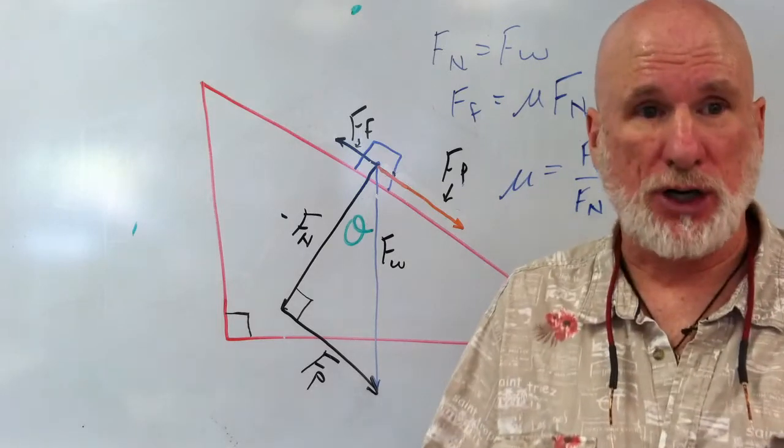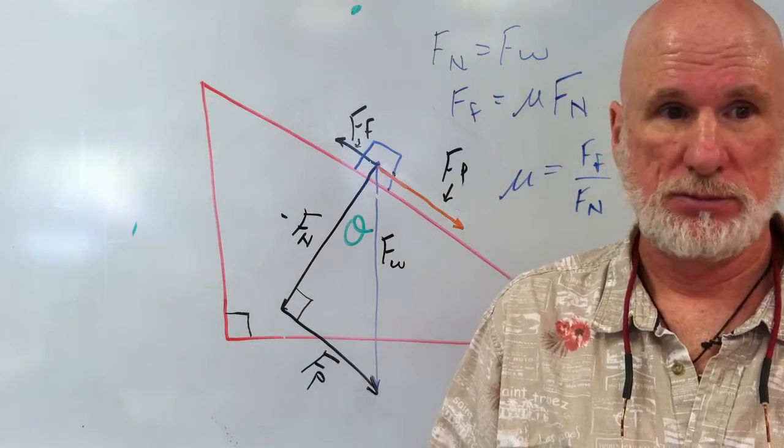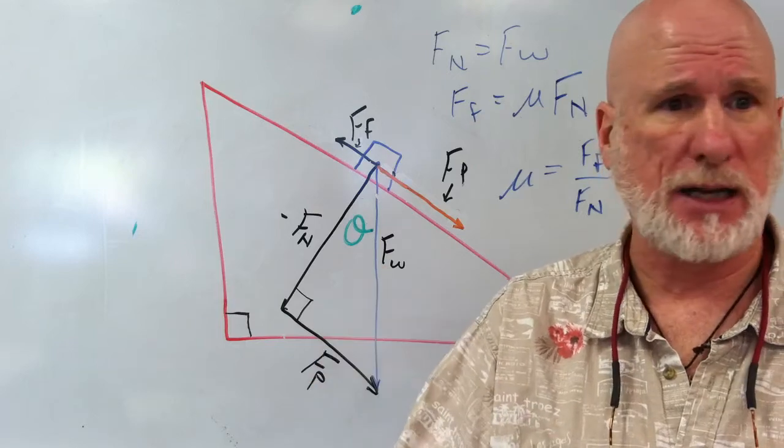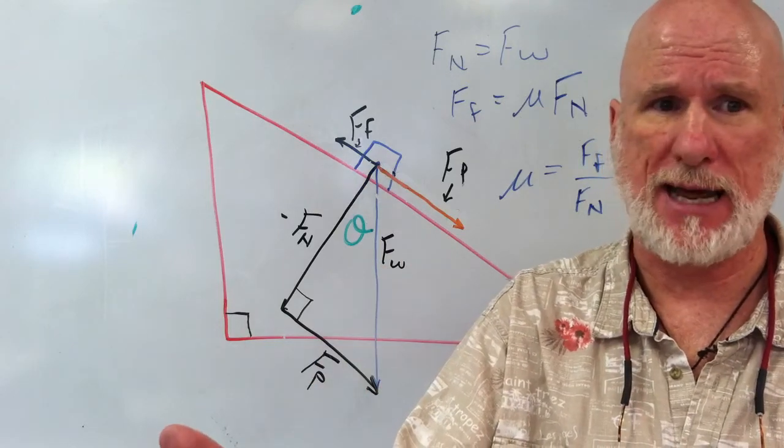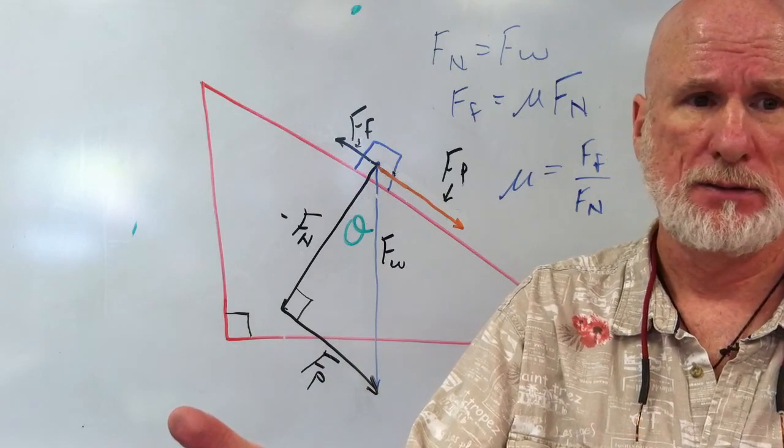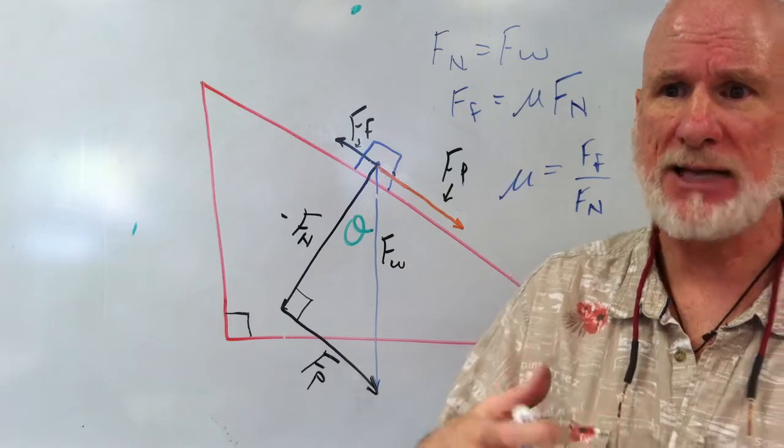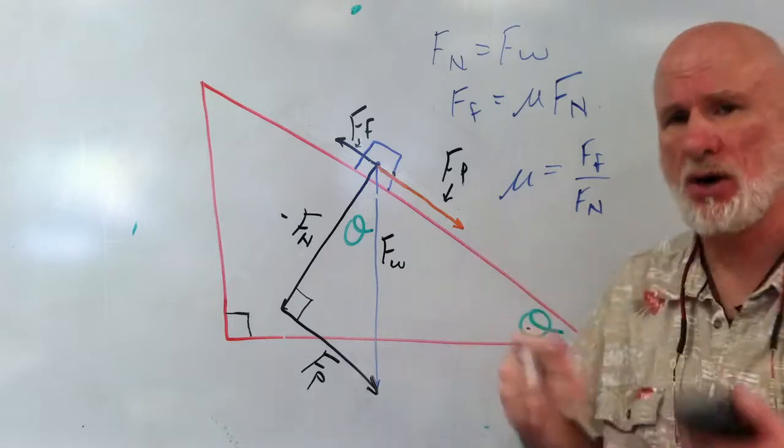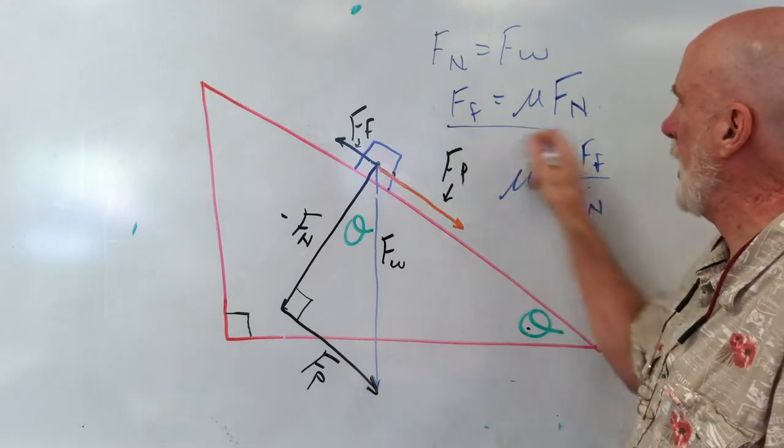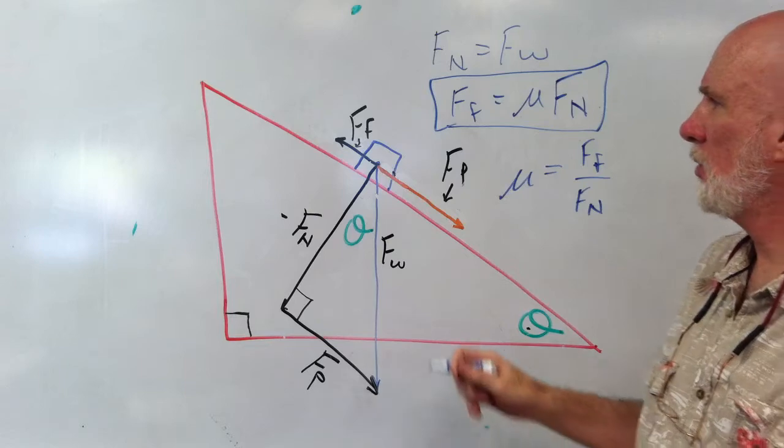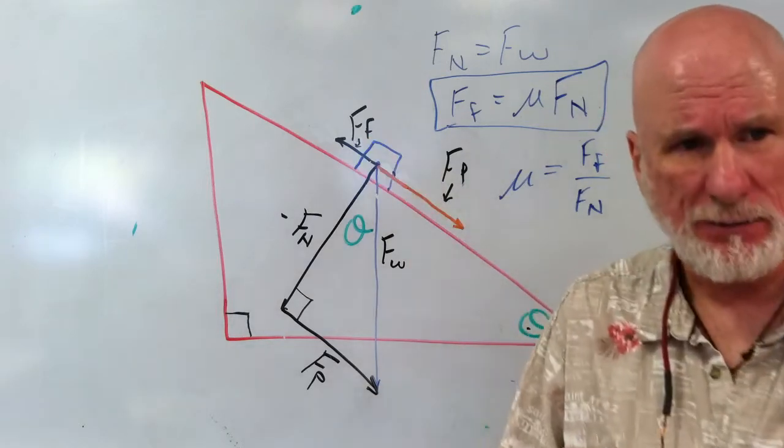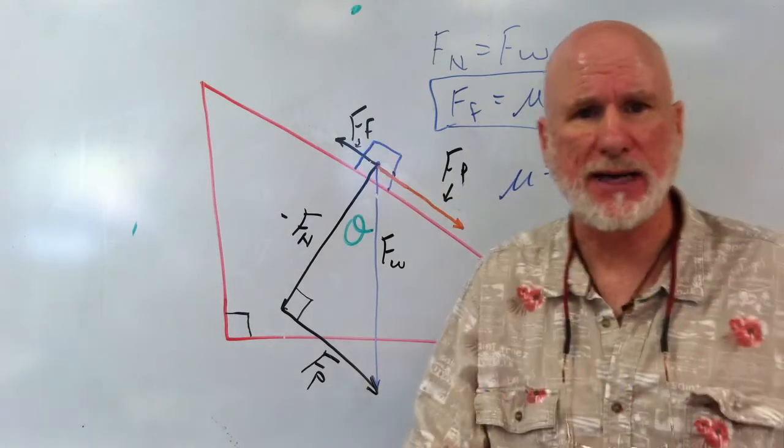So, in the next problem we're going to do, I'm going to give you mu. Okay. And then in another problem, I'll give you force of friction and the normal, and you'll have to come up with mu. Clear? But that's what mu is, the coefficient of friction. That's actually how we calculate the friction. So, the force of friction could be given, or it could be calculated. Have a great day.